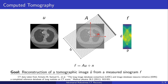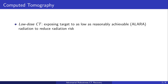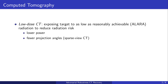Computer tomography involves recording attenuated X-ray radiation projected from different angles around a target. The recorded measurements are then arranged into a sinogram from which a CT image is to be reconstructed. As X-ray exposure poses serious health risks, reducing the radiation dose is desirable.